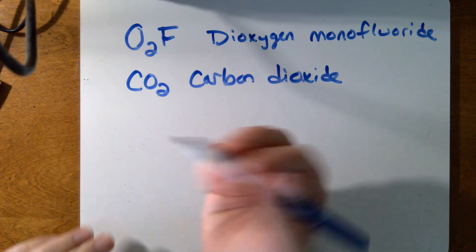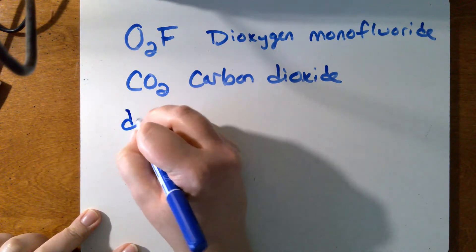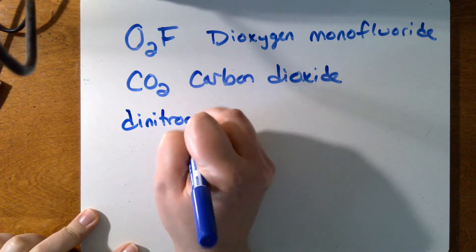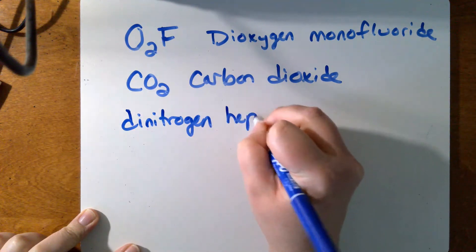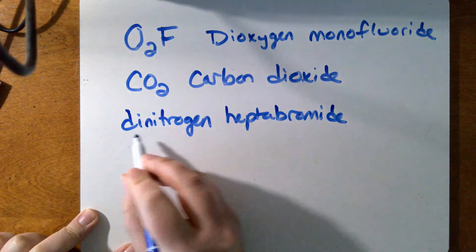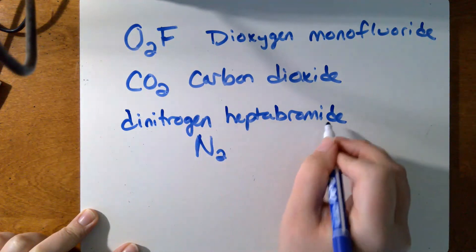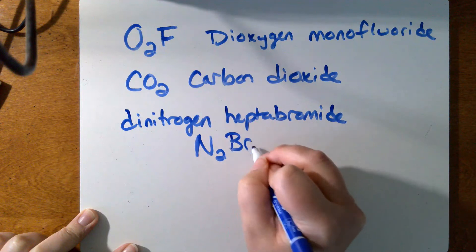Going the other direction is not too hard either. So let's say that I had dinitrogen heptabromide. Dinitrogen, that means two nitrogens. Heptabromide, that means seven bromines.